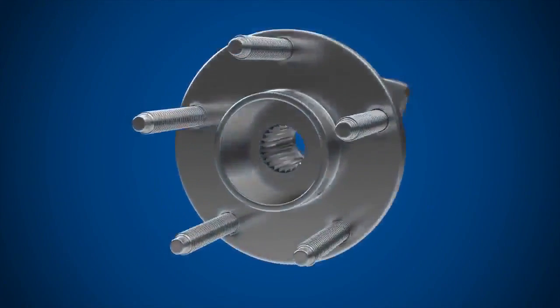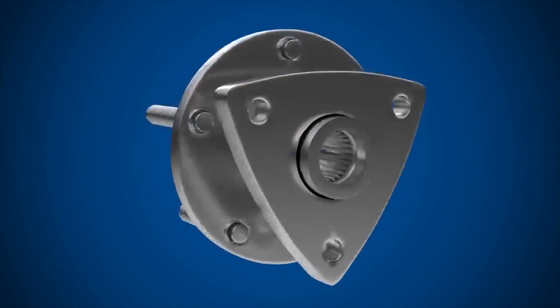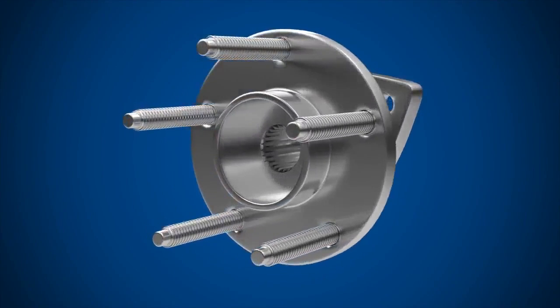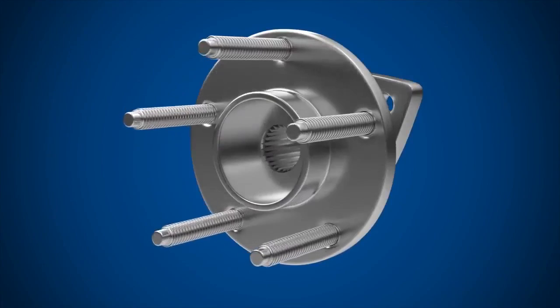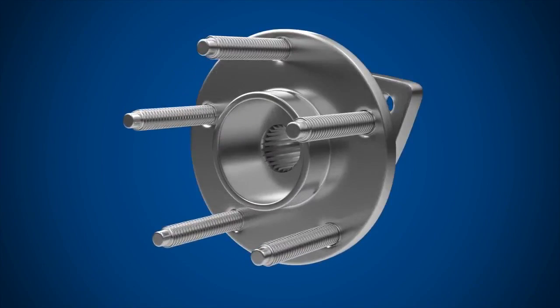The wheel hub assembly attaches to the chassis of the vehicle and holds the brake disc and wheel. A bearing inside the wheel hub assembly allows the wheel and brake disc to rotate smoothly.